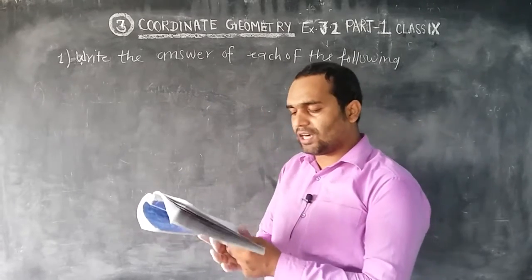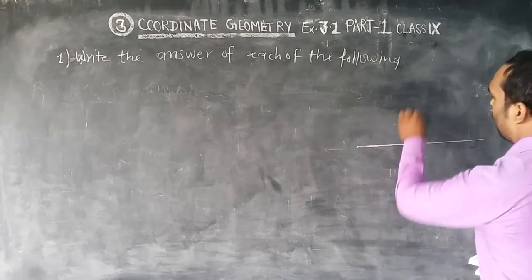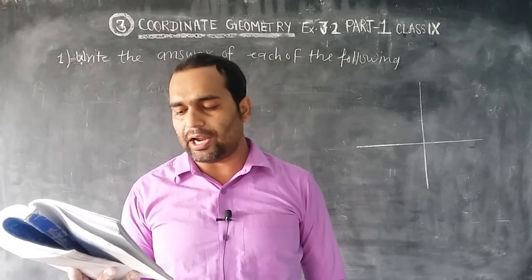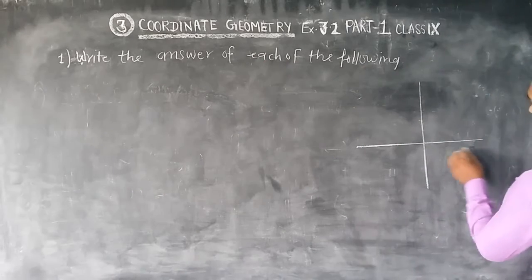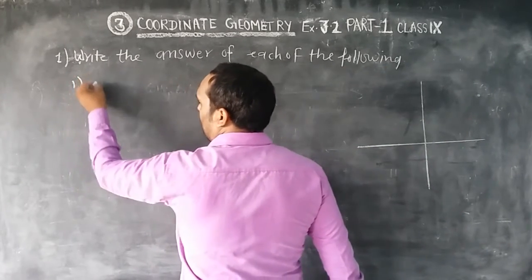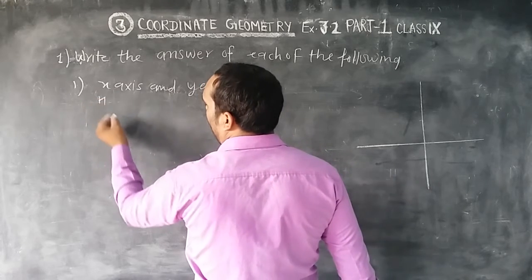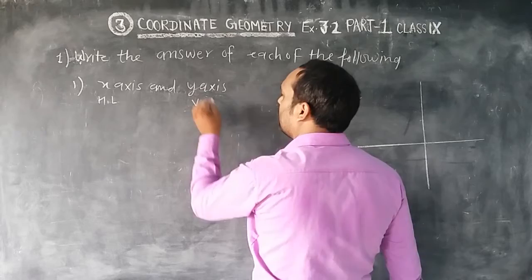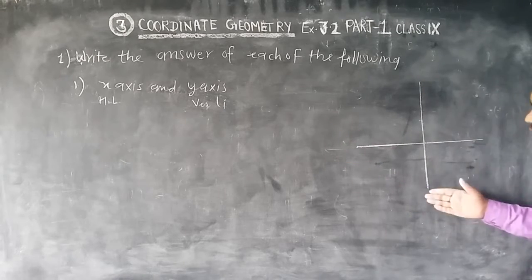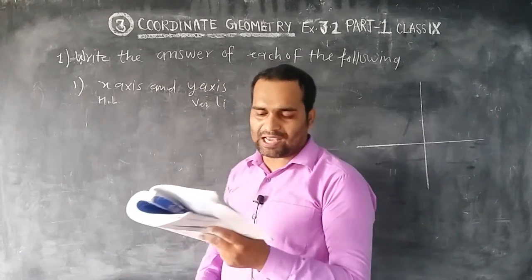First question: what is the name of the horizontal and vertical line? In the Cartesian plane, the horizontal line is called the x-axis and the vertical line is called the y-axis. So the answer is: horizontal line is x-axis and vertical line is y-axis.